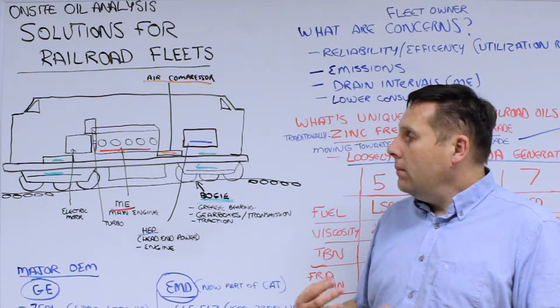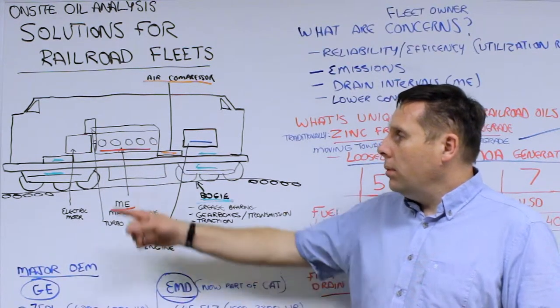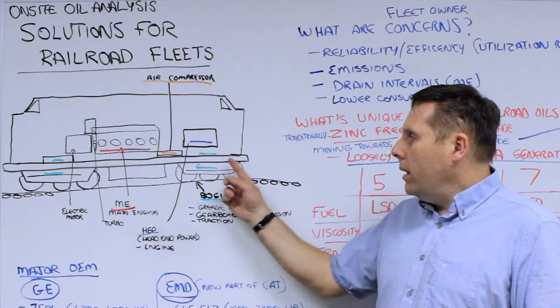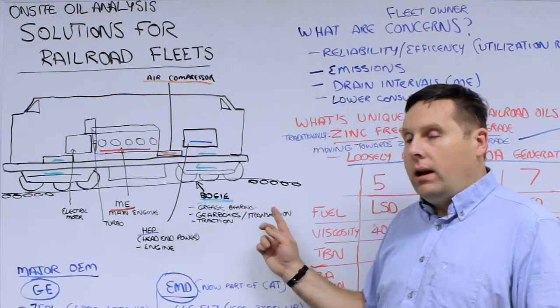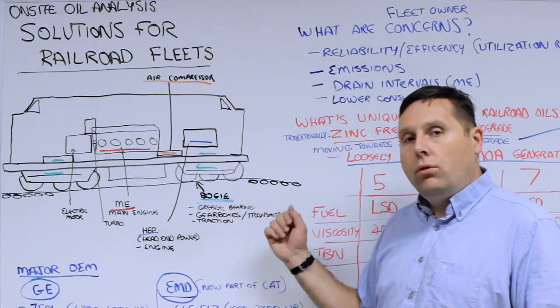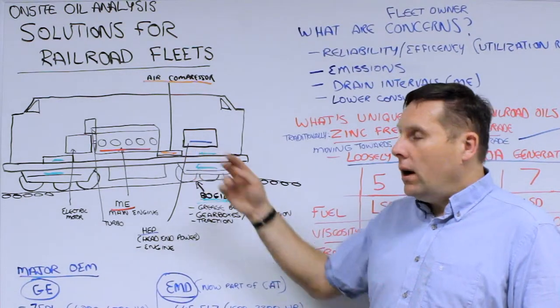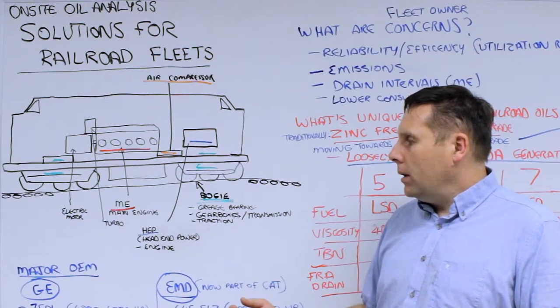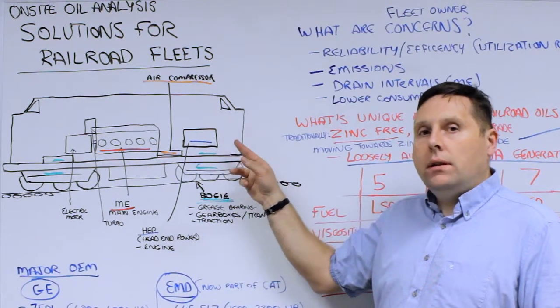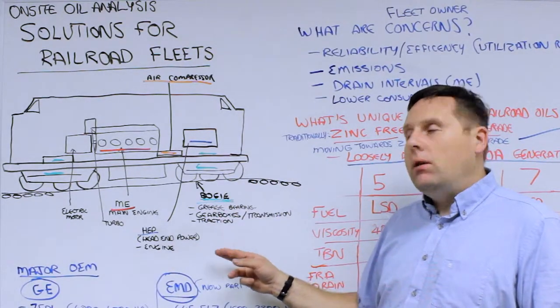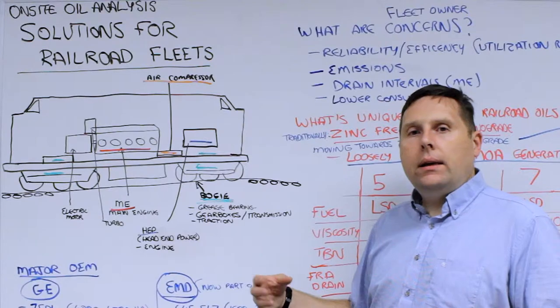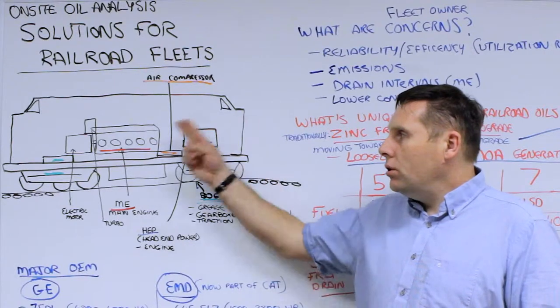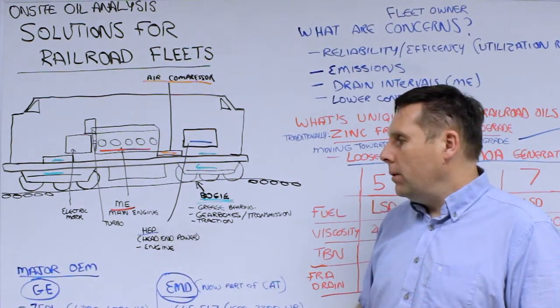Within the wheels themselves, you can have grease bearings, gearboxes or transmissions for traction motor bearings, and air compressors for brakes throughout the train. In passenger applications, you may have an additional diesel engine providing HEP or head-end power—essentially lighting and heat for the rest of the train. As you can see, there are many different applications on a prime mover.